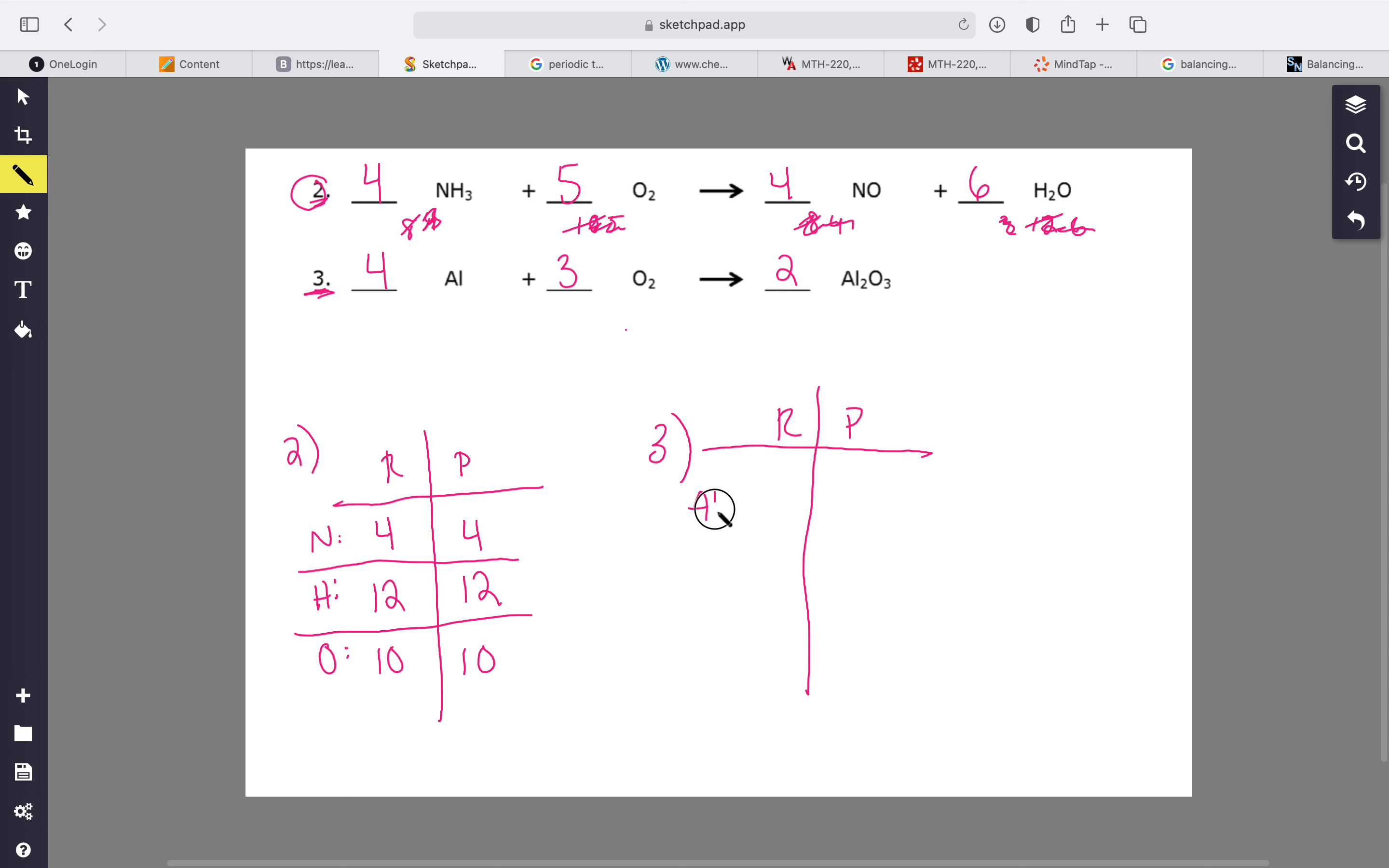And we only have to worry about aluminum and oxygen. Awesome, we love when they're easy. Okay, so aluminum - right now there's four in the reactants, and in the products there's also four. Yay, aluminum is good, I'm gonna put a check mark because we like that.